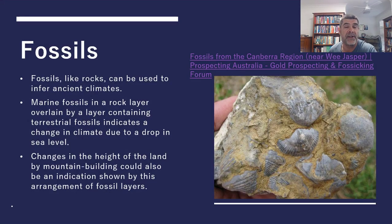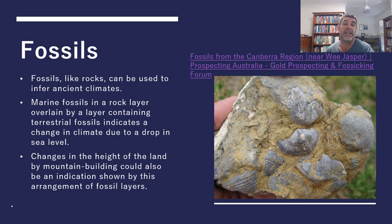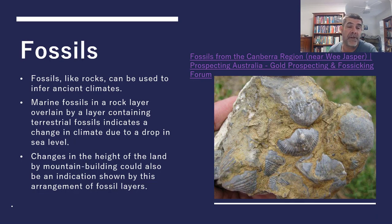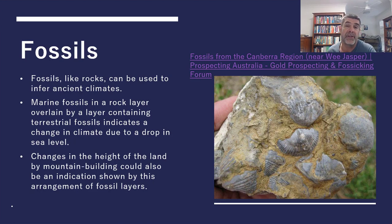I was very fortunate when I was a postgrad undertaking my master's study to have the opportunity to wander around Weejasper, and when you do that you can find some absolutely fantastic fossils that just look like stones underneath your feet. Brachiopods in particular were one very significant and very common fossil I found in that area. Fossils, just like rocks, can also be used to infer ancient climates, and just like rock layers, when we look at different layers of rock overlaying others, we can conclude what types of environments may have led to their formation. We can make similar conclusions when we look at the fossils in those rocks.